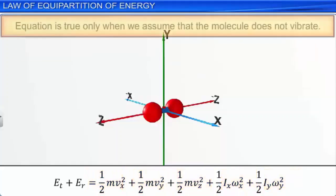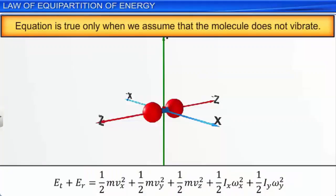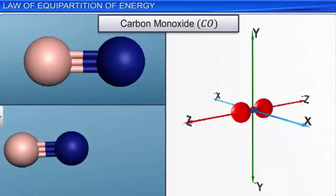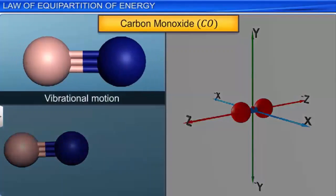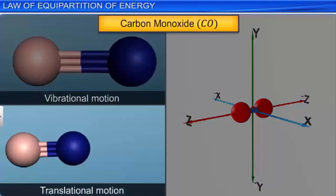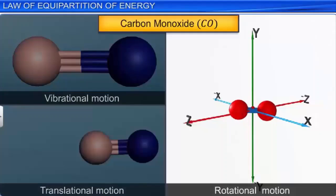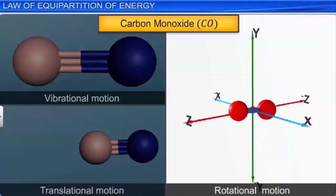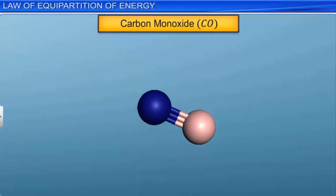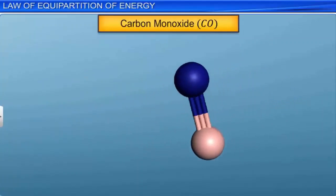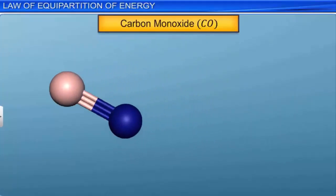This equation is true only when we assume that the molecule does not vibrate. But there are some diatomic molecules like carbon monoxide that exhibit vibratory motion along with translational and rotational motion, even at moderate temperatures. The two atoms of the carbon monoxide molecule are separated by some distance, and they vibrate along its length by a small distance r.